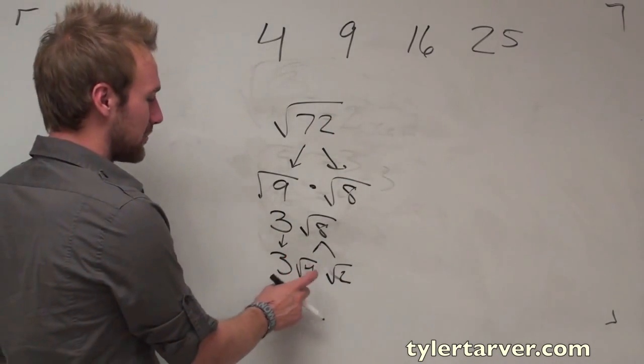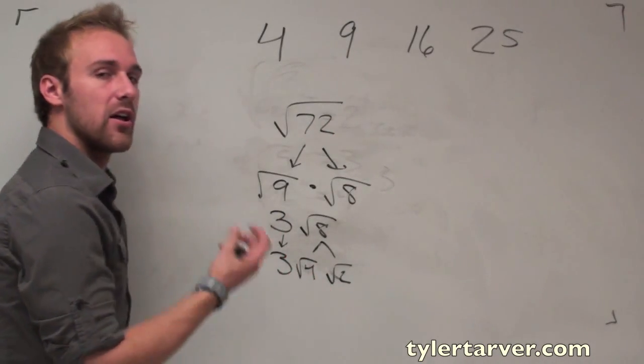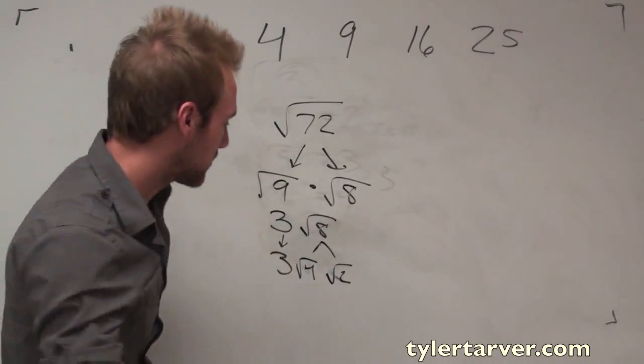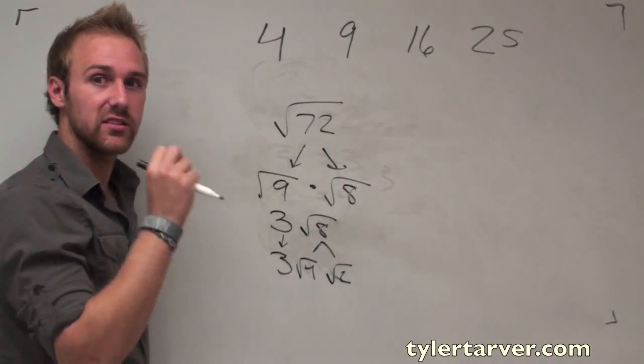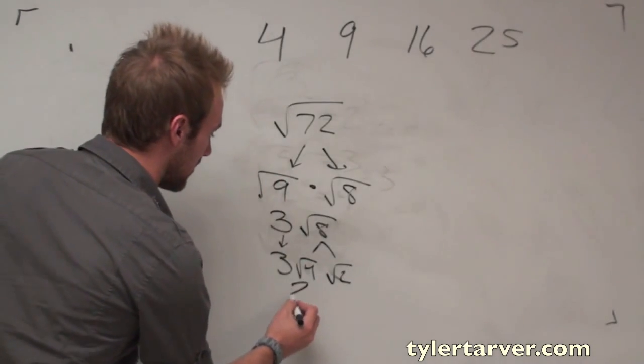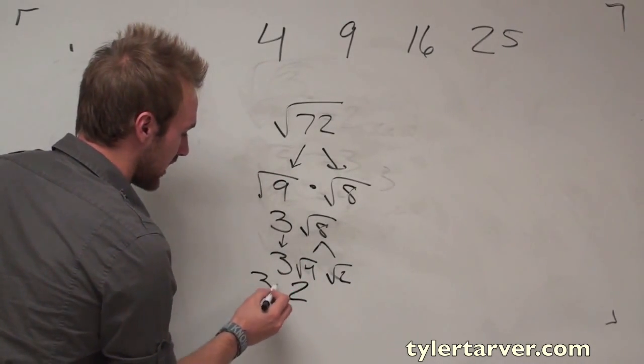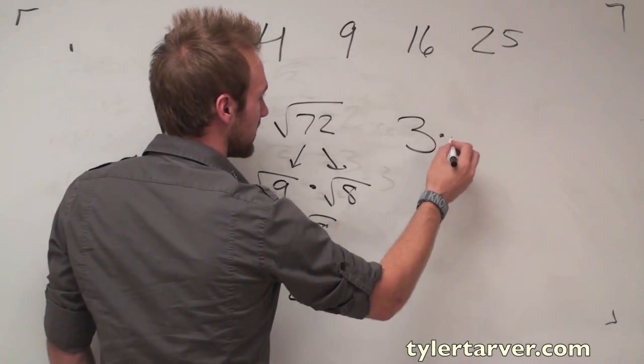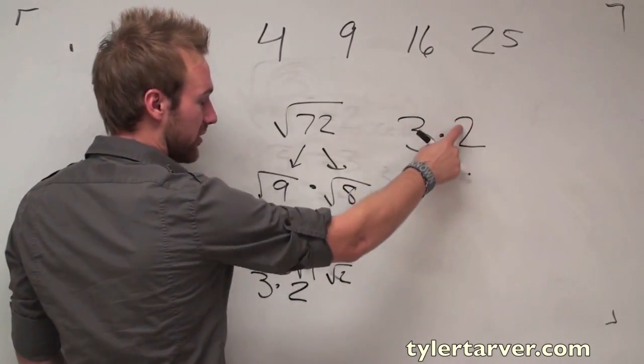Okay? So, we've got three times radical four times radical two. Now, the reason I split it up into this number was why? That's right, because the radical four is positive two. So, I bring down my three. It's three. I'm going to write it up here if that's okay with all y'all, because I'm running out of room.